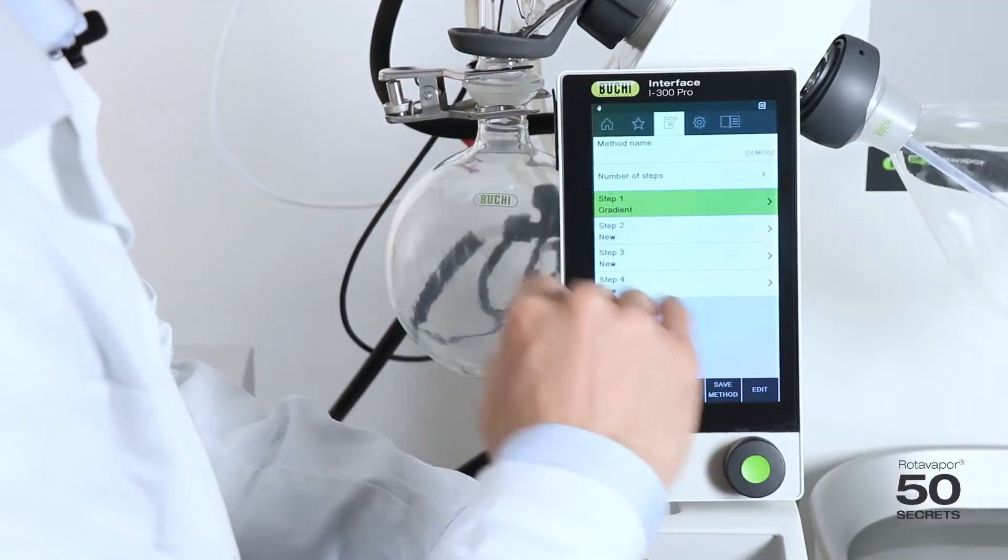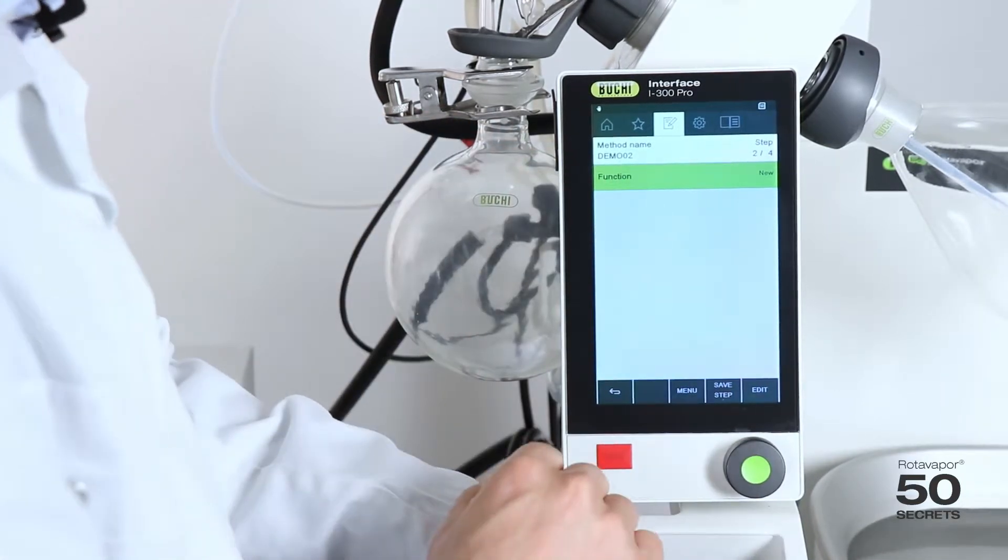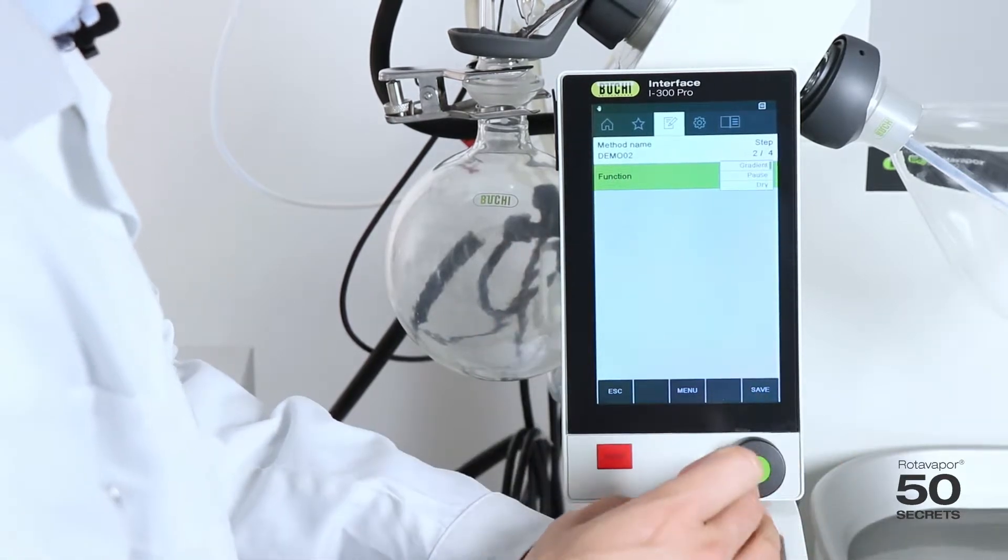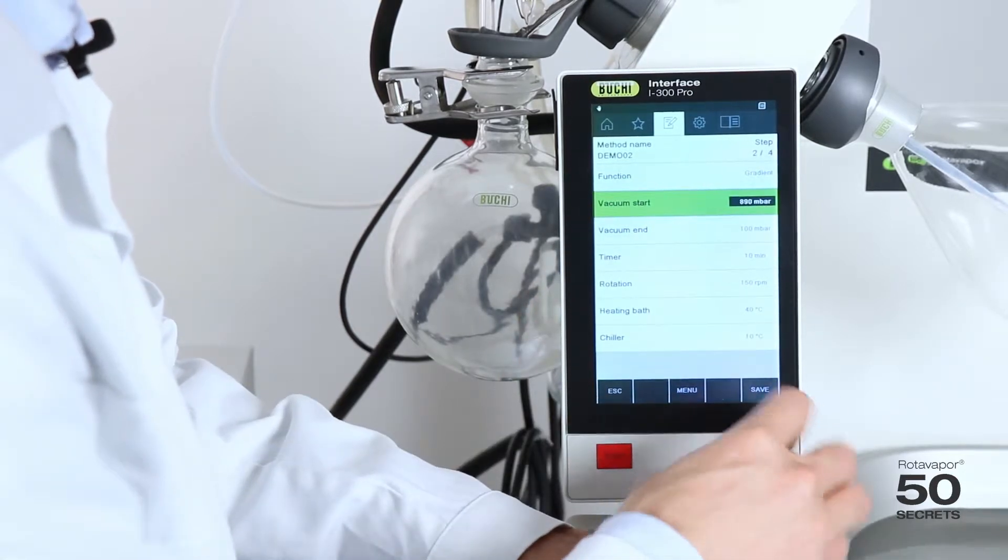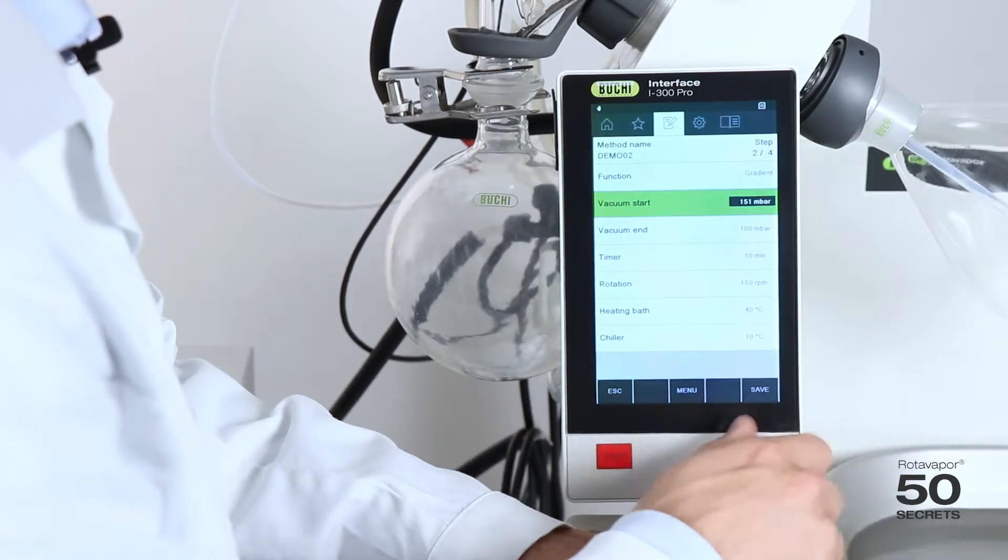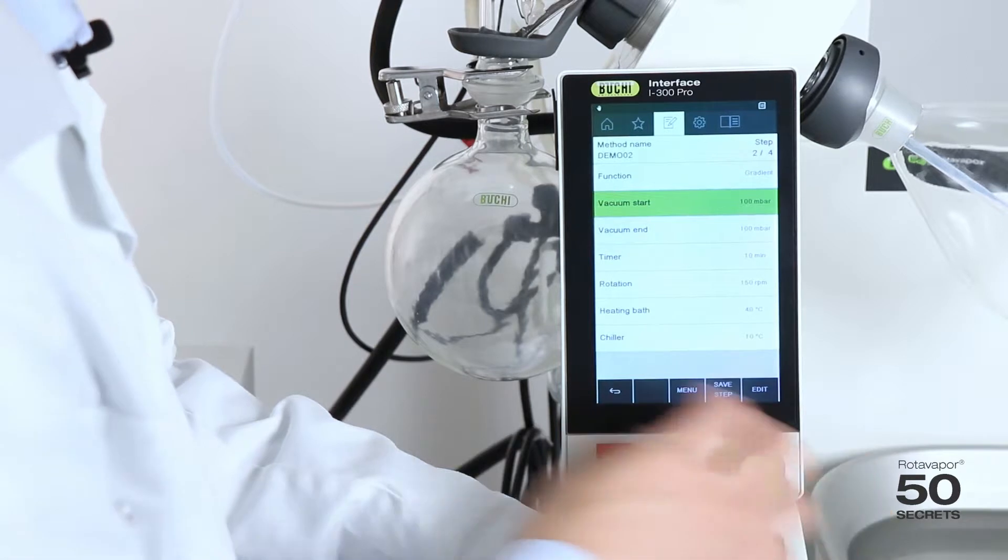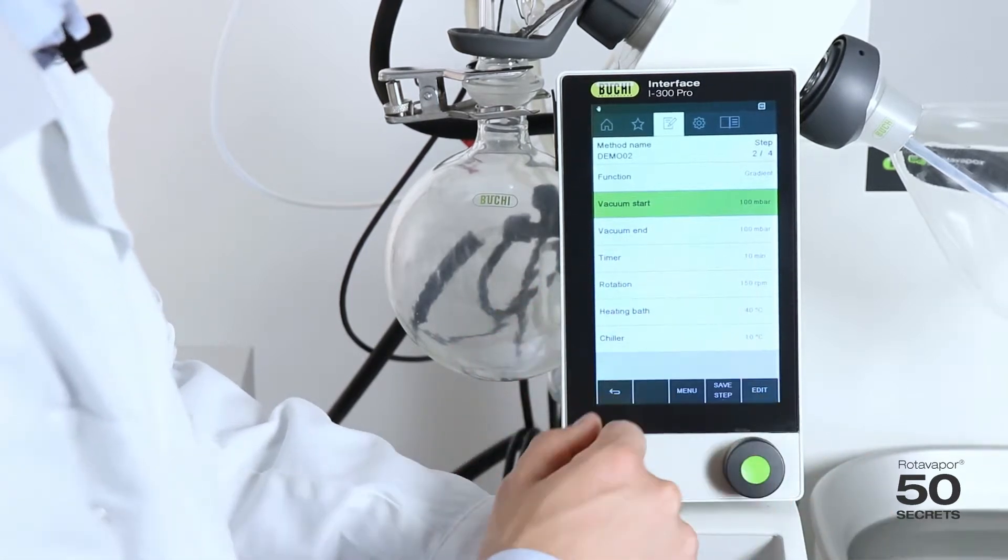The second step now as we are on 100 millibar would be to stay on the 100 millibar for 10 minutes. We choose the same function. It's a gradient again, but instead of doing a gradient we just set the vacuum to 100 millibar. Just do this by using the wheel. 100. Fantastic. The timer 10 minutes. Rotation still 150. Safe.